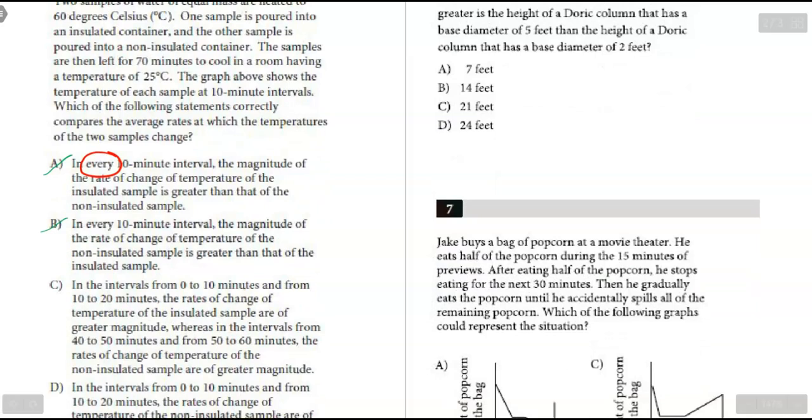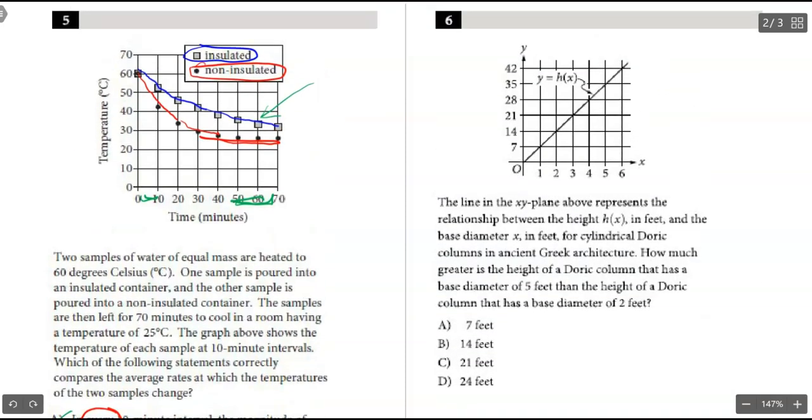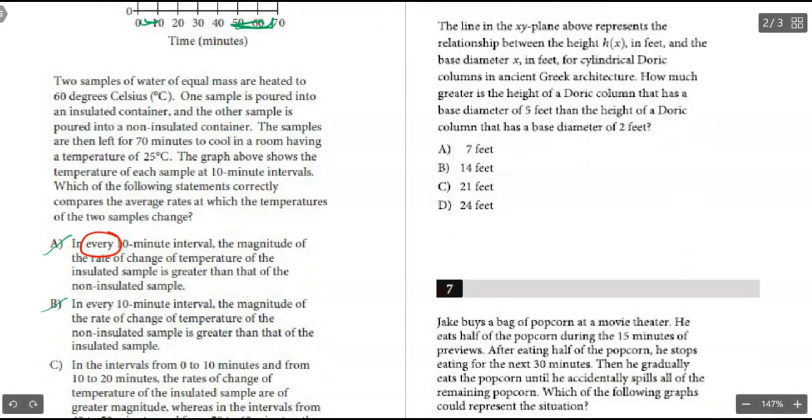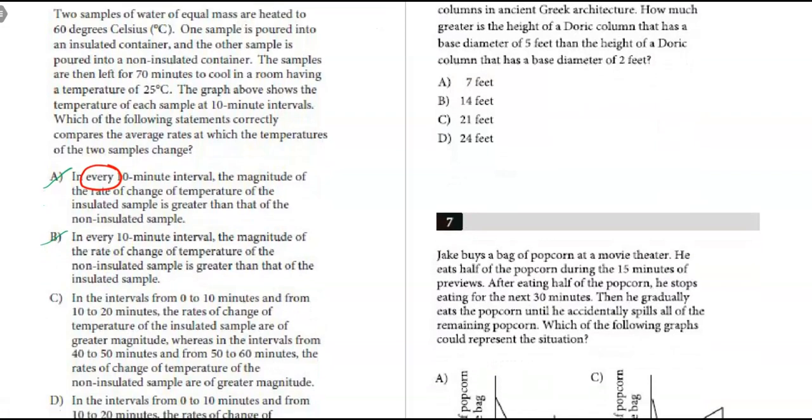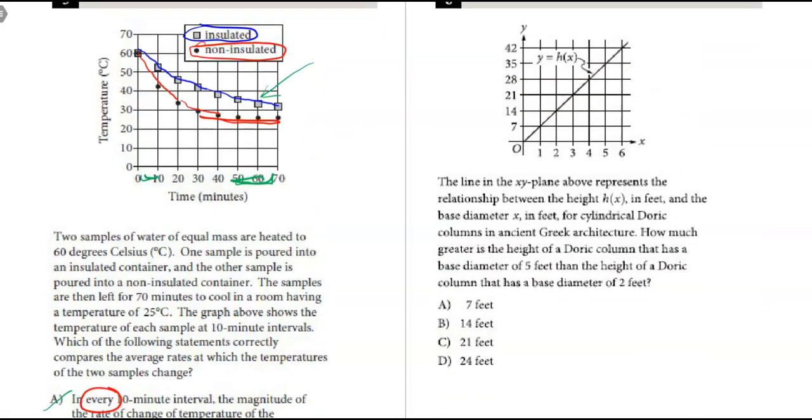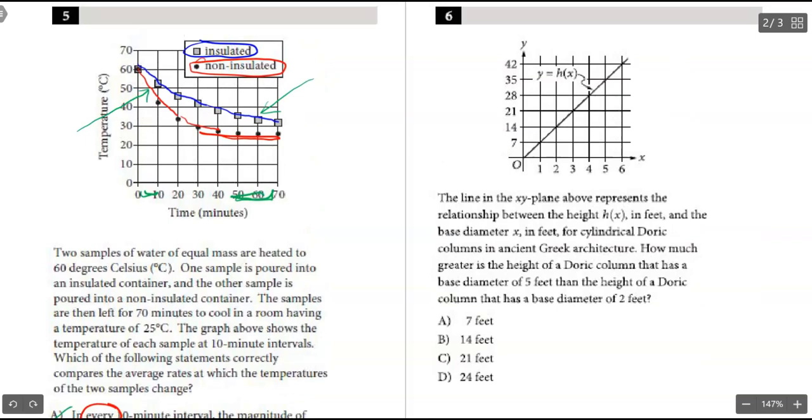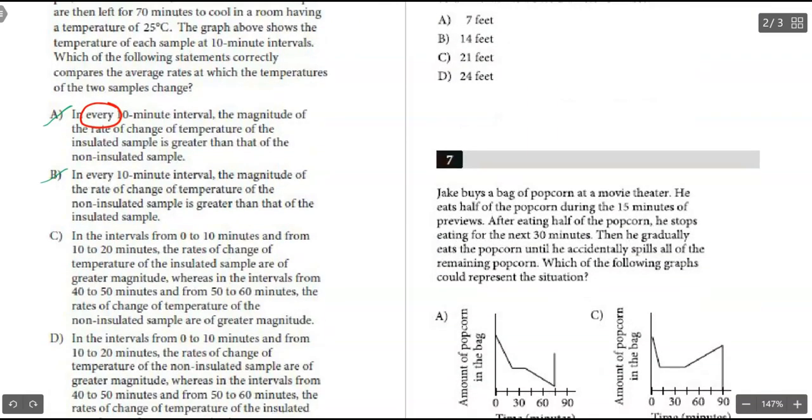Part C, from 0 to 10 and 10 to 20, the rate of change of the insulated is bigger, and then 50 to 60, non-insulated is bigger. I do not believe so. I believe from 0 to 10, the non-insulated has a greater change. So in part D, from 0 to 10 and 10 to 20, the rate of the non-insulated has a greater magnitude. I believe this one's true, so the correct answer is D.